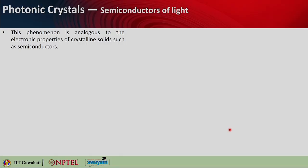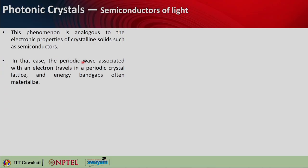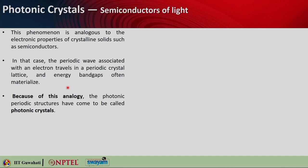This phenomenon is already seen in semiconductor crystals. If you look into the electronic properties of crystalline solids such as semiconductors, you find similar features where you have energy band gaps. There are conductors, insulators, and semiconductors — in semiconductors there is a band gap, meaning that particular energy is not supported in that semiconductor crystal. A periodic wave associated with an electron travels in a periodic crystal lattice, and energy band gaps materialize. Because of this analogy, the photonic periodic structures can also be called photonic crystals, just like semiconductor crystals. So 1D, 2D, and 3D photonic structures can be called 1D, 2D, or 3D photonic crystals.